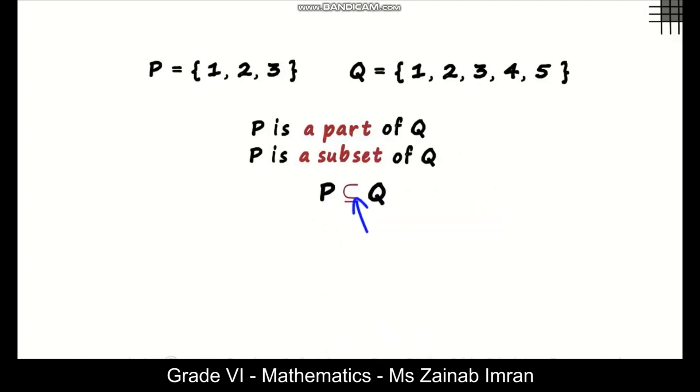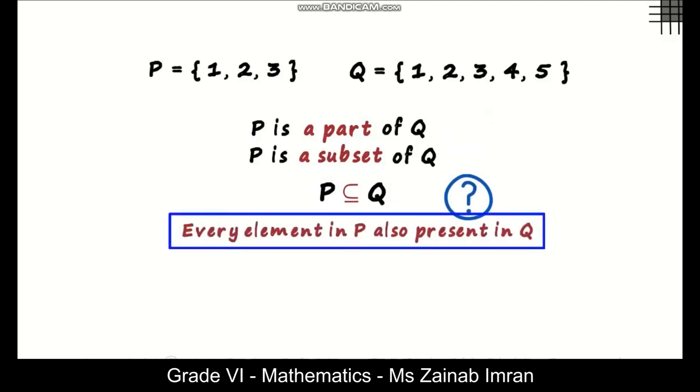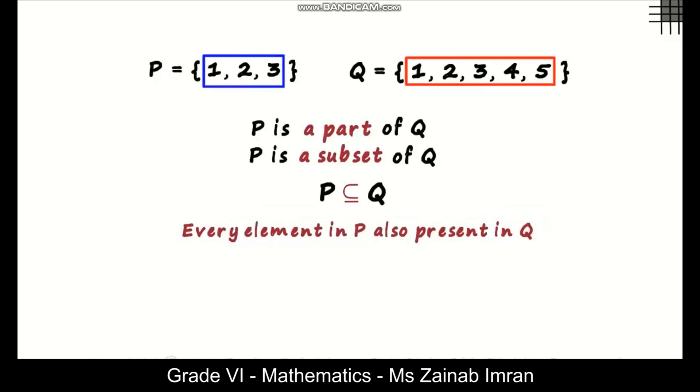The letter U is sleeping on this line. So when is P a subset of Q? Set P is a subset of set Q when every element in P is also present in Q. Look at the elements. Every element in P is also present in Q.